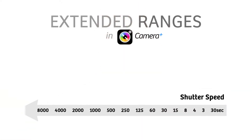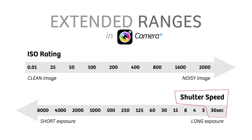Camera Plus, working hand-in-hand with the new extended range of shutter speeds, also has an extended range of ISOs. Camera Plus now gives you an extended ISO range from ISO 20 to 0.01. That's low.